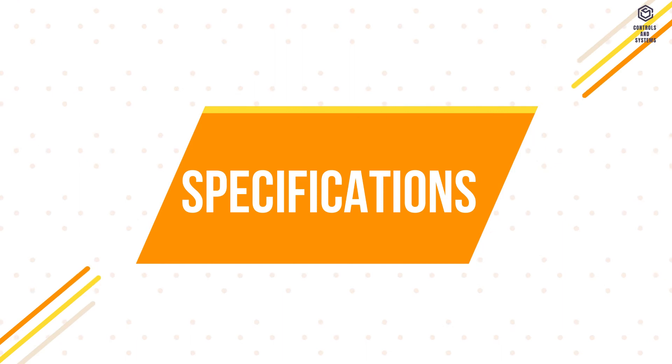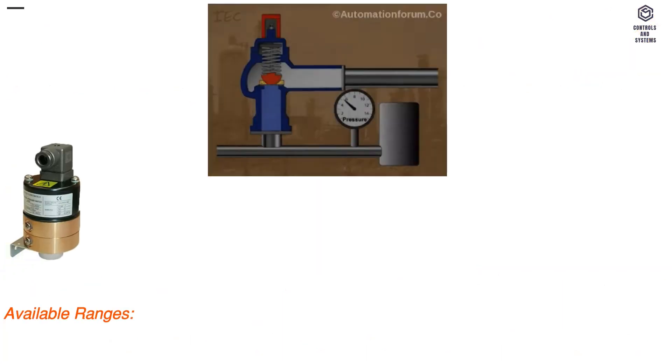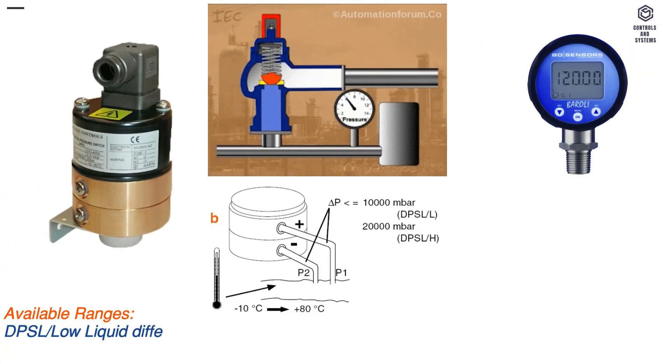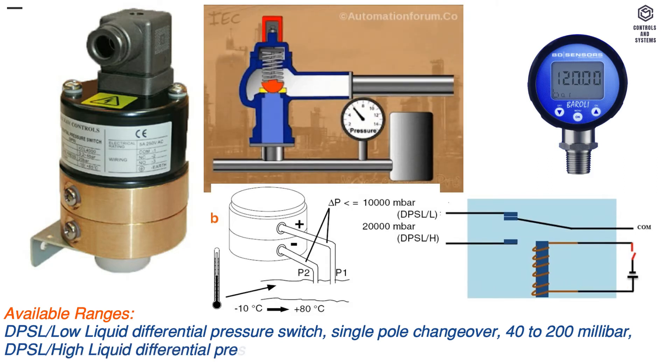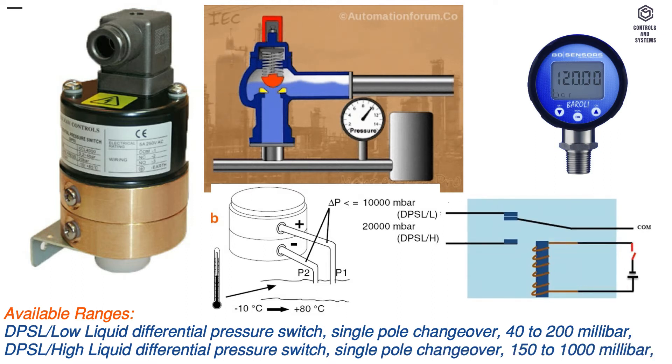Specifications. Available ranges: DPSL, low liquid differential pressure switch, single pole changeover, 40 to 200 millibar. DPSL high, 150 to 1000 millibar.